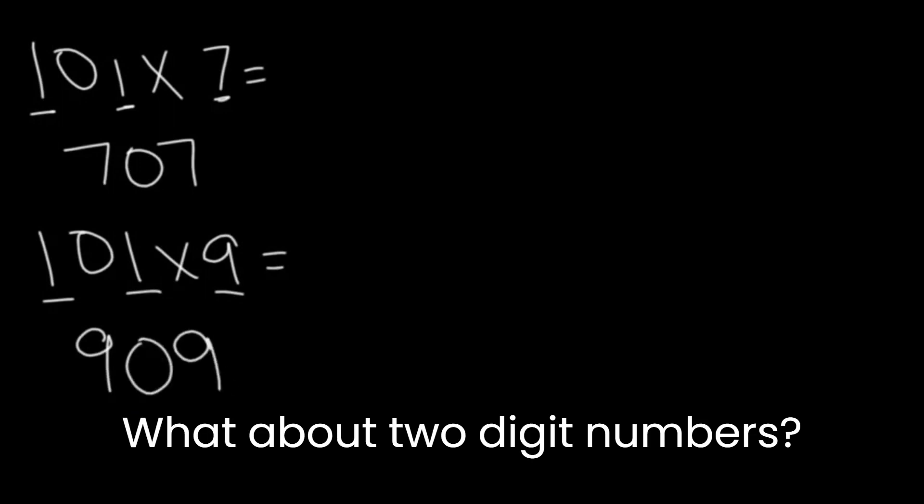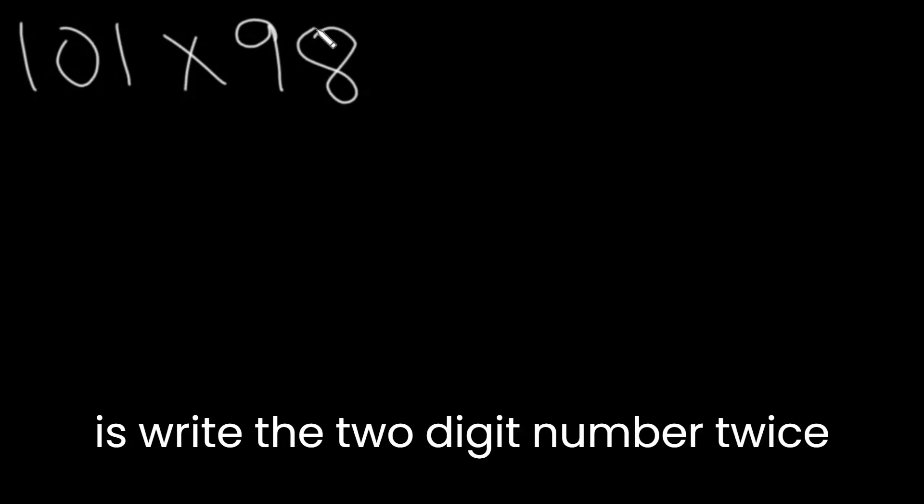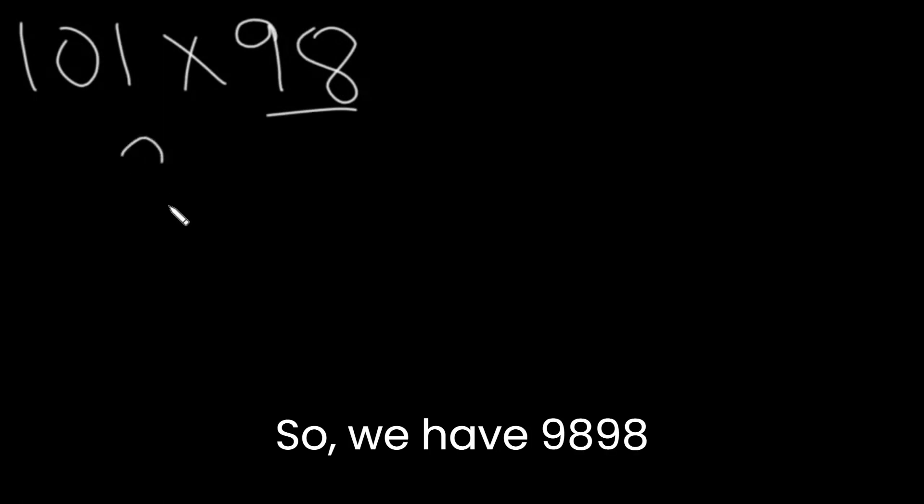What about two-digit numbers? Let's say we have 101 times 98. For two-digit numbers, all we have to do is write the two-digit number twice. So we have 9898. That's it.